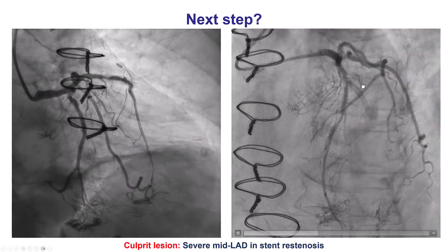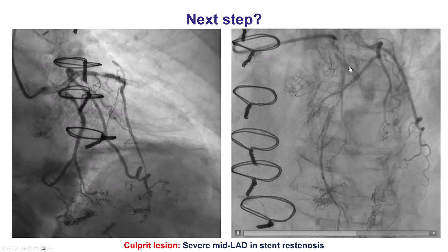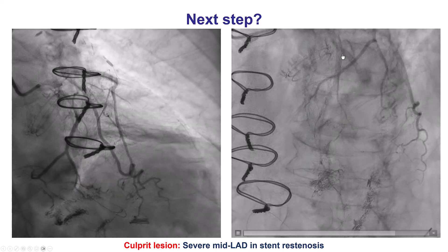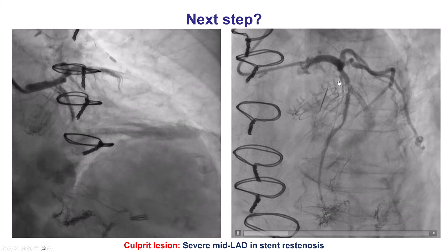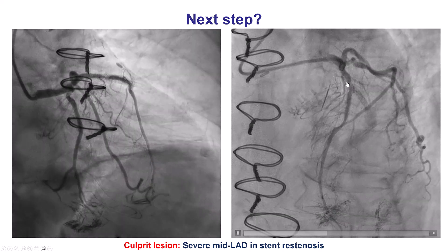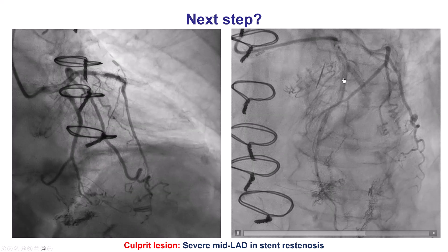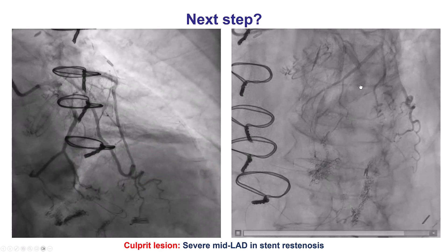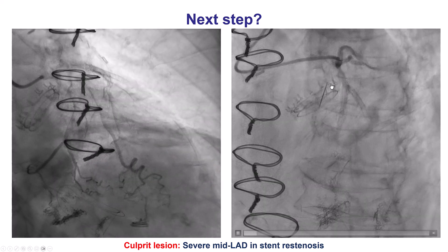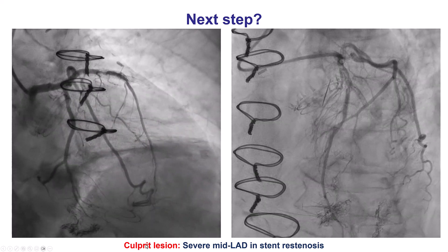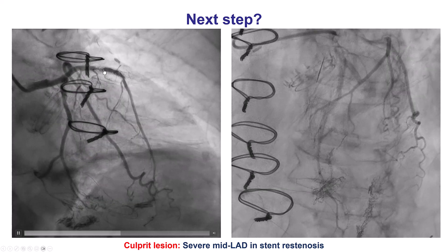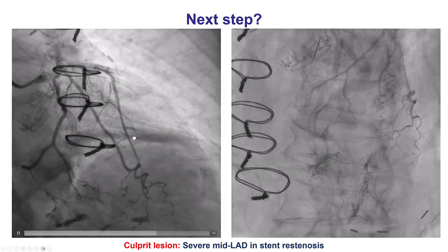However, in the LAD, there was a severe lesion in the middle LAD at the bifurcation of the diagonal branch that had been occluded. And this seemed to be the culprit lesion for the patient's symptoms.